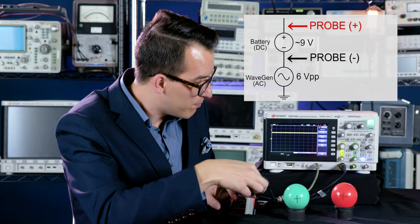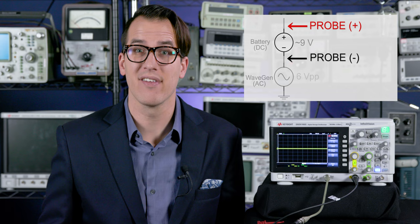So regardless of any outside influences, the oscilloscope is only going to measure the voltage difference between the ground pin and the probe tip.